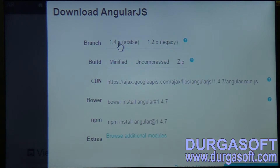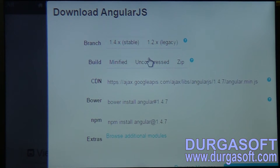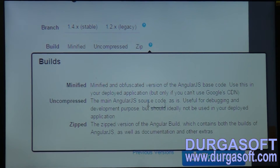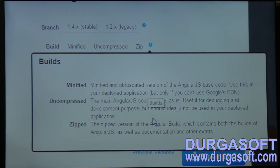Once we click on 1.4.x, we click on uncompressed. What is the difference between minified and uncompressed? Uncompressed means it contains the full source code as it is — the actual source code of AngularJS — so the code will be a bit lengthy. Minified means the same code but in a shortcut format where there are no comments, no line breaks, no spaces, and short variable names.